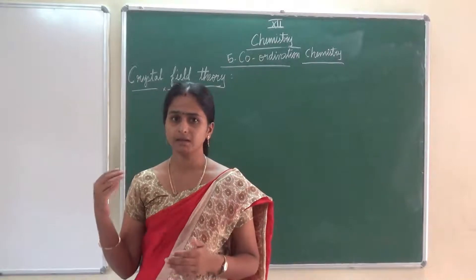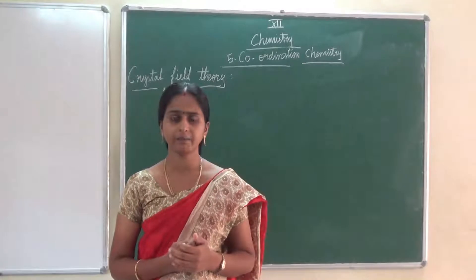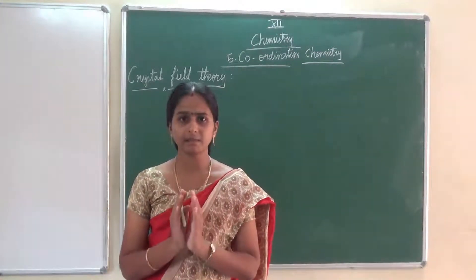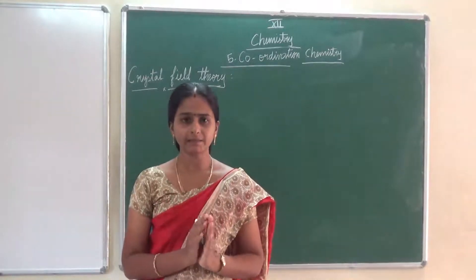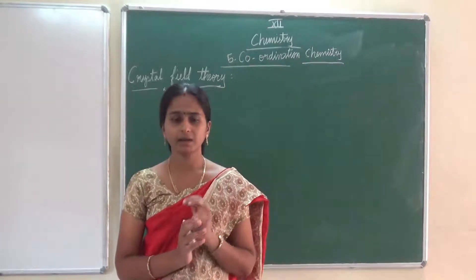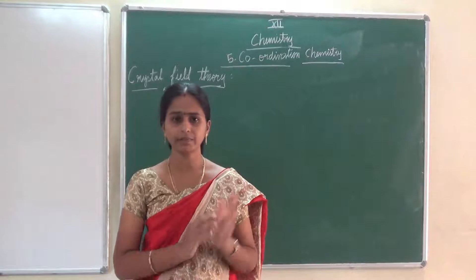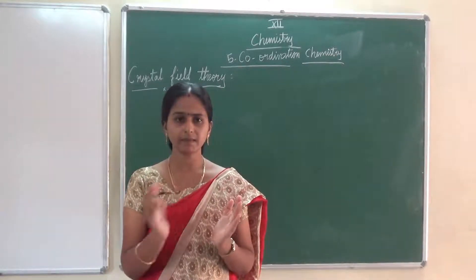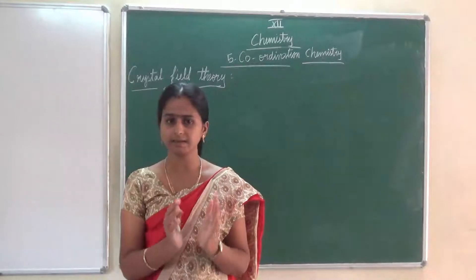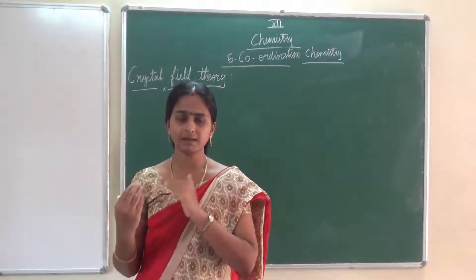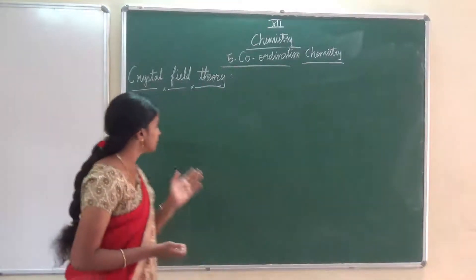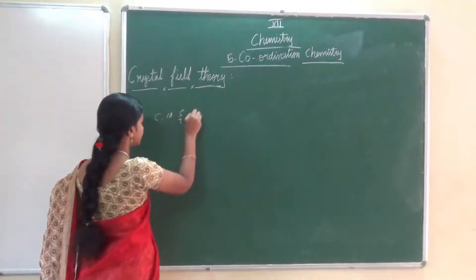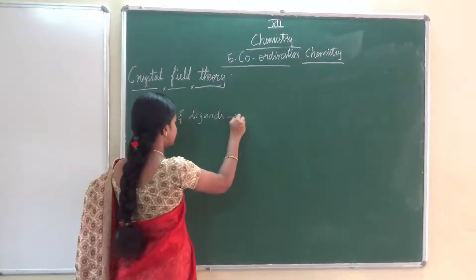Now we are going to see the salient features of crystal field theory. The first point: according to this theory, the central metal atom and the ligands are considered as point charges. Just like in ionic compounds we have cation and anion with an electrostatic force between them — that electrostatic force is called ionic bond. The same concept we are going to apply here between the ligand and the central metal atom.